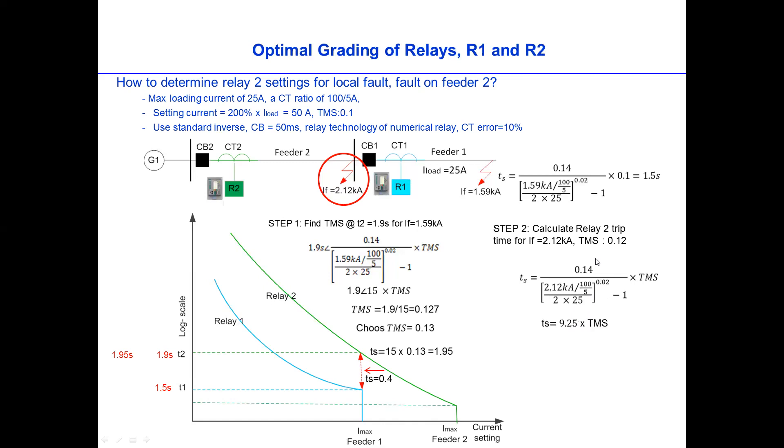So now if we calculate this one, it is 9.25 times the TMS. We know the TMS is 0.13, which is this one. This is a type of error, basically. 0.13. Then the trip time will be 1.2 seconds. This Relay 2 will trip for local fault at 1.2 seconds, which is faster than anyone. Because the fault magnitude is higher than the fault magnitude of the Relay 1.